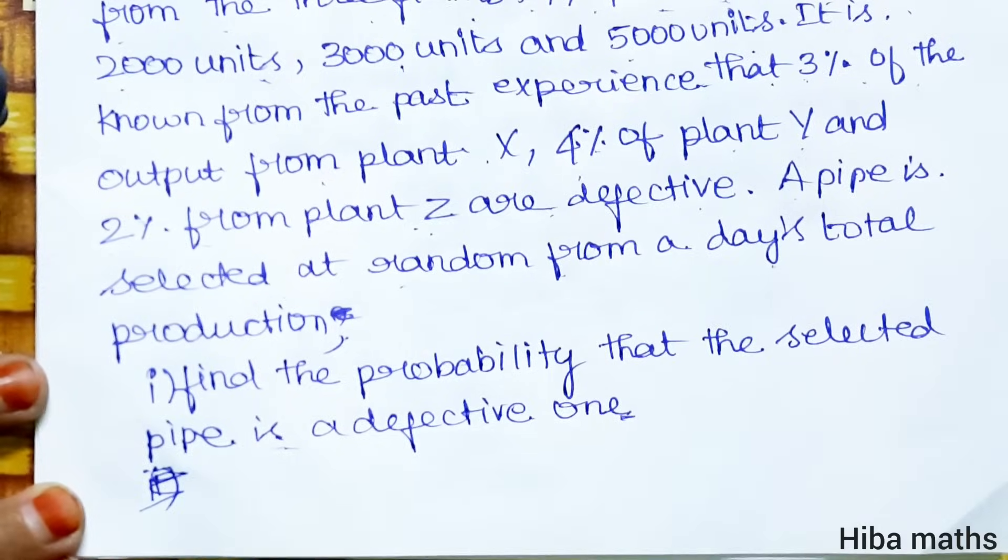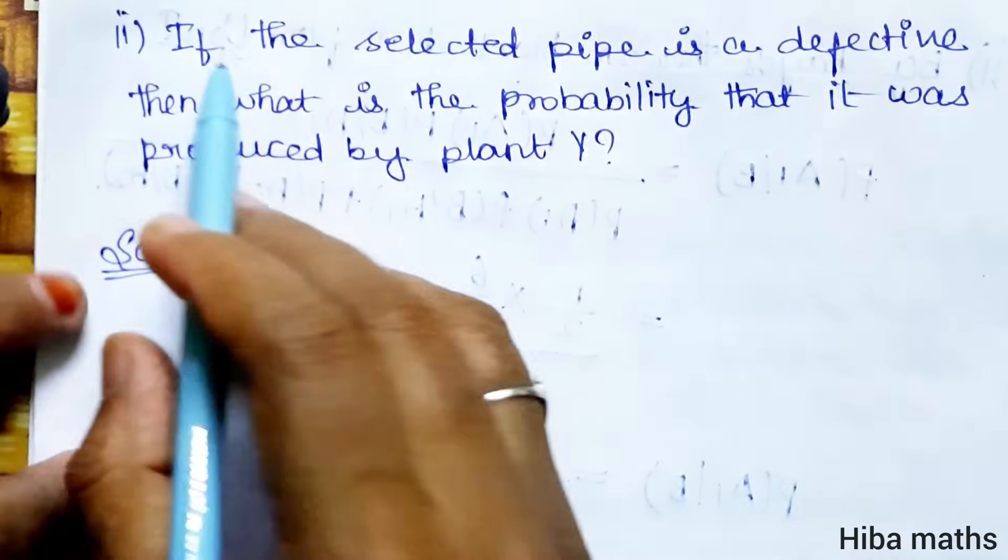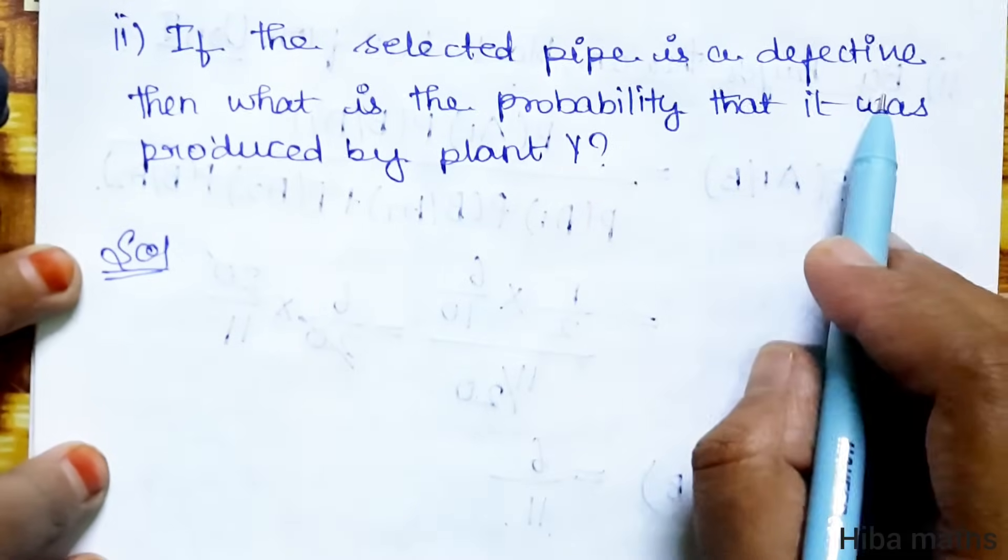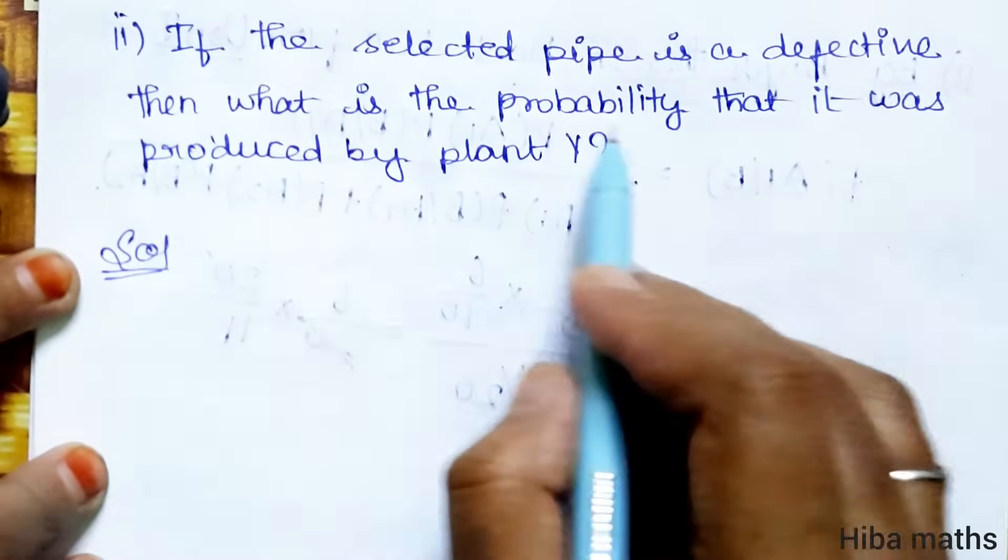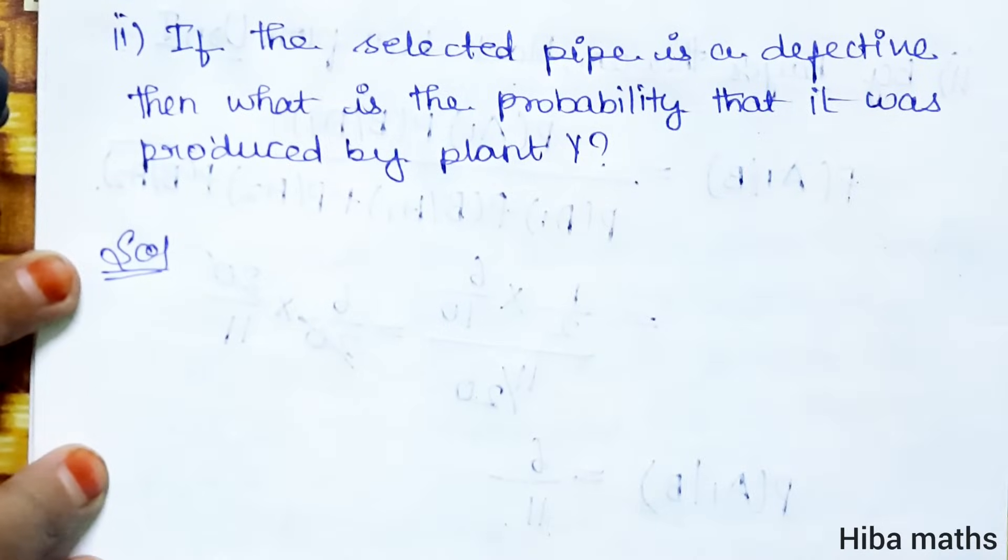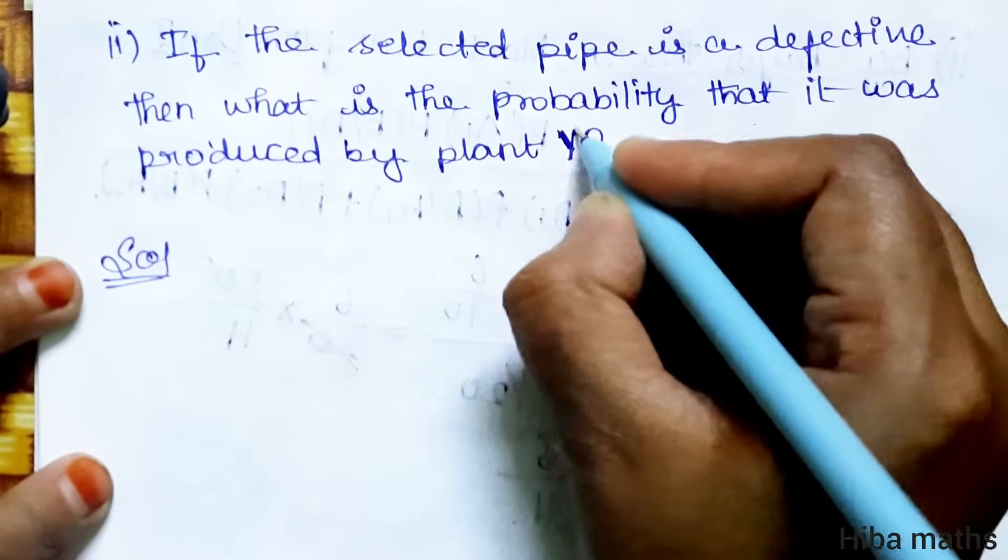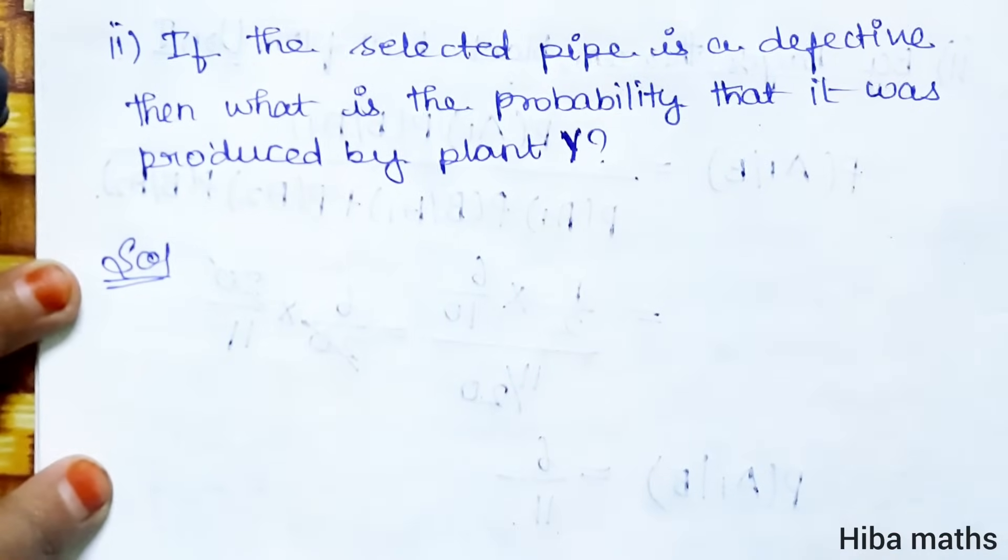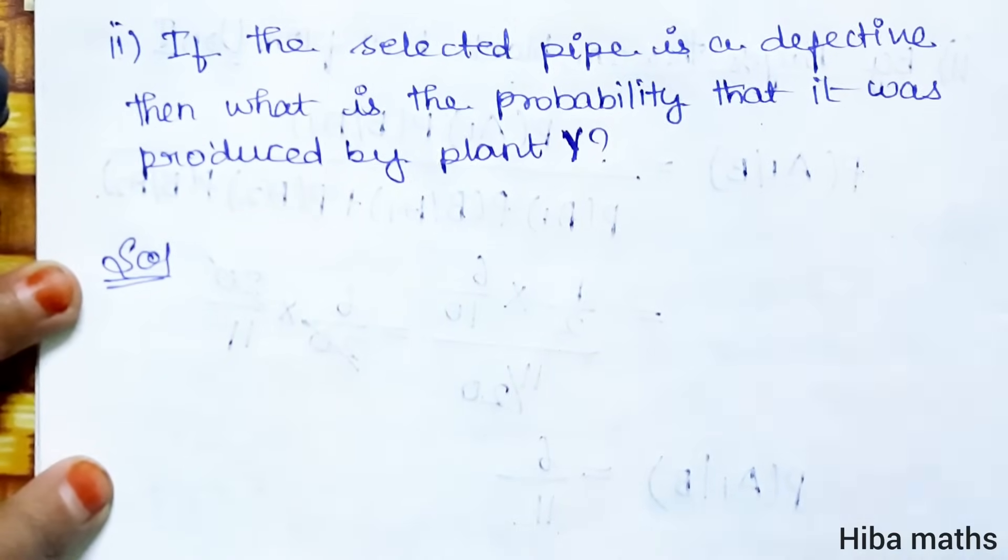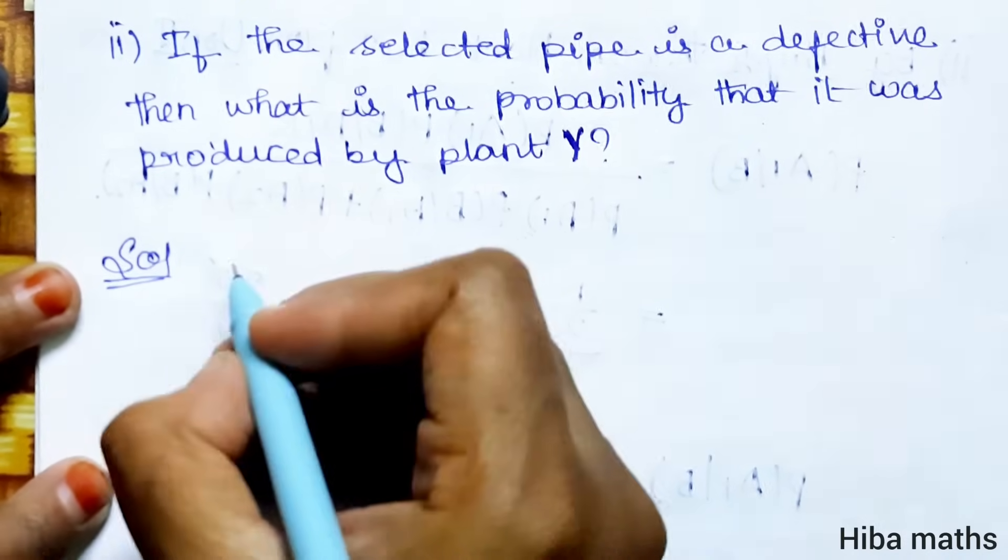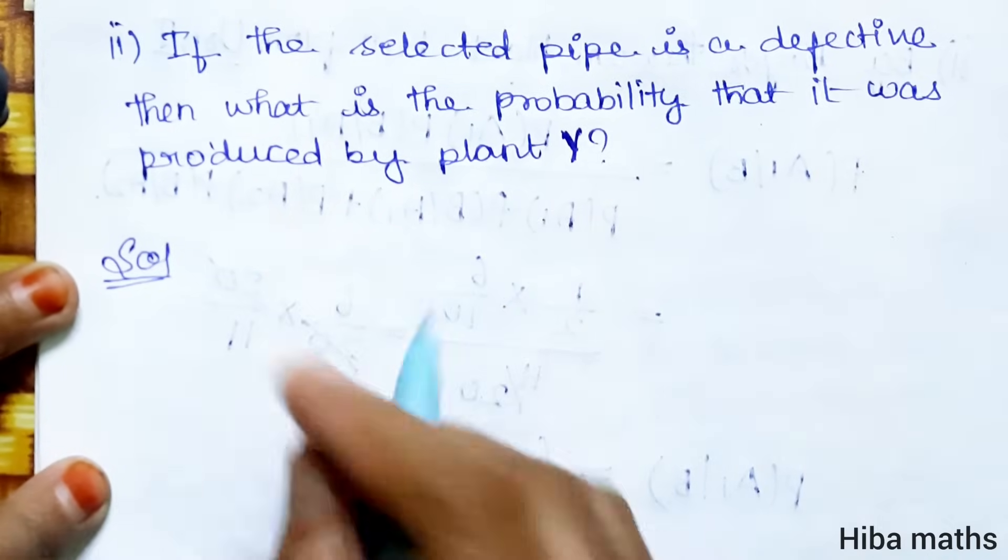This is the first question. Second question is, if the selected pipe is defective, then what is the probability that it was produced by plant Y? First question is, how is it defective? Second question is, how is it defective and plant Y is defective?